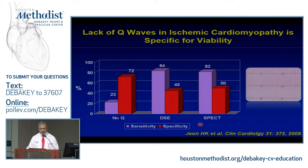Lack of Q waves — this is from Dr. Jong when he was here from Korea. If you look at no Q waves in somebody who has depressed ventricular function and coronary disease — basically a normal electrocardiogram — you could take it to the bank that you're going to have a lot of viability. Specificity is 72%, but sensitivity is low. This is in the same cohort of dobutamine stress echo and SPECT imaging.